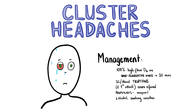An acute cluster headache can be treated with 100% high-flow oxygen via a non-rebreather mask for at least 20 minutes. Subcutaneous or nasal triptans can also be given in acute attacks. For those presenting with a first bout of cluster headaches, it's necessary to refer to a specialist neurologist for diagnosis and initiation of prophylactic treatment, such as verapamil. As cluster headaches can be triggered by smoking and alcohol consumption, it's important to inform the patient and support them to stop smoking or reduce alcohol intake. Cluster headaches are very severe and have led to sufferers committing suicide in the past.